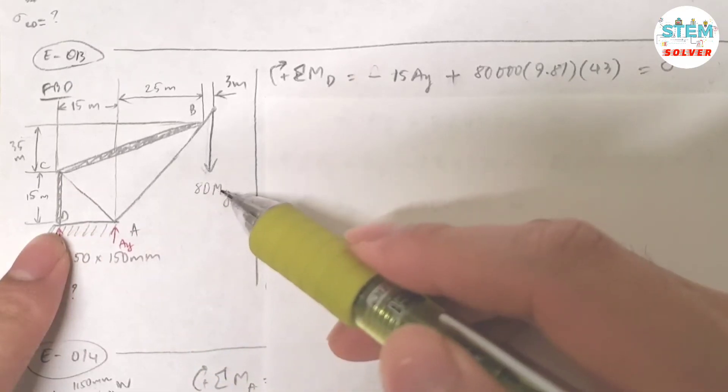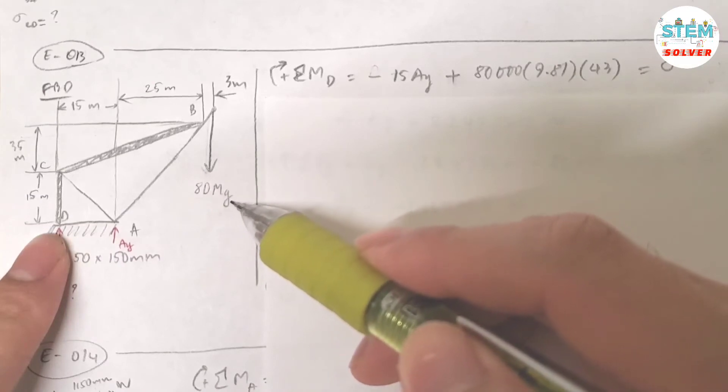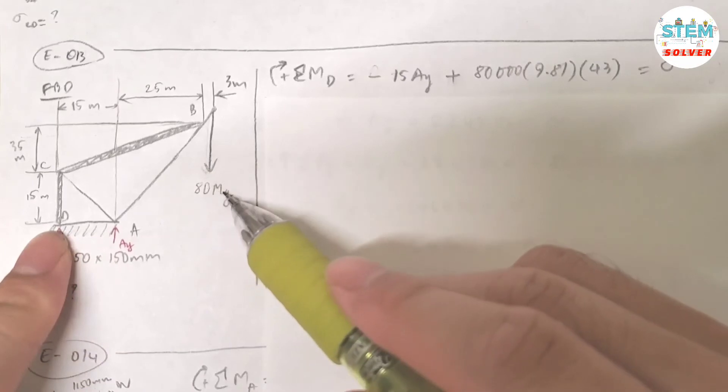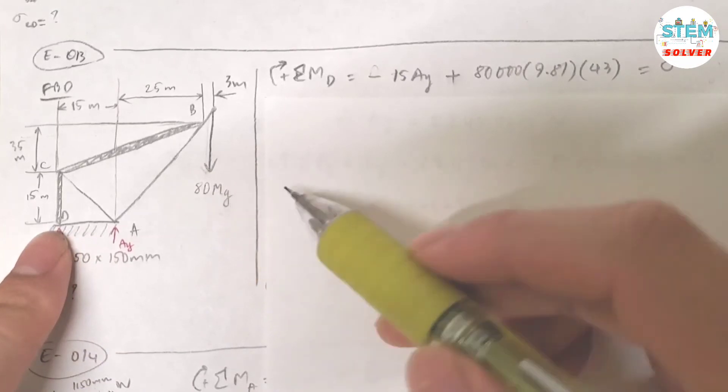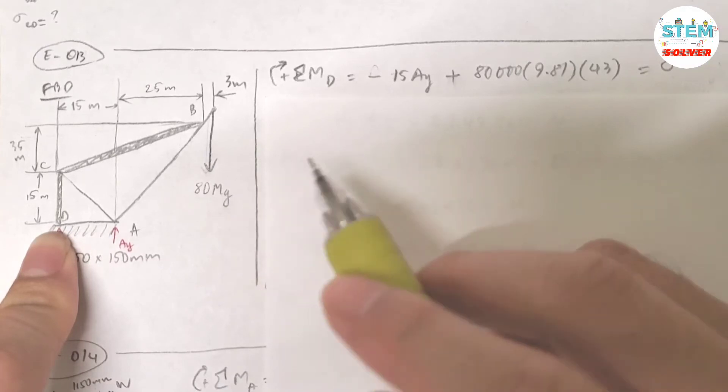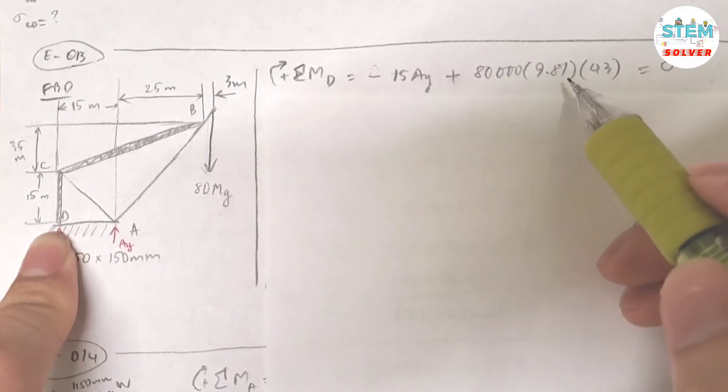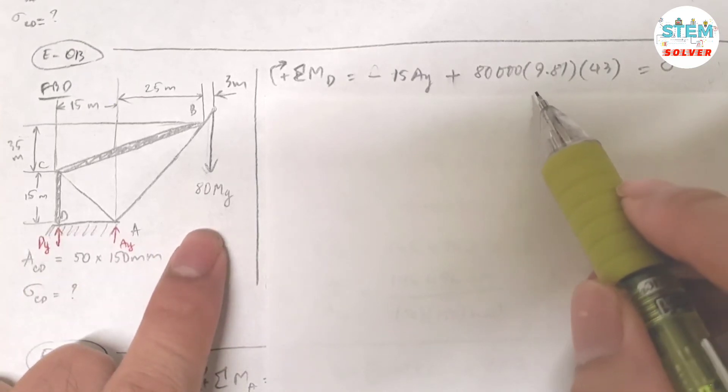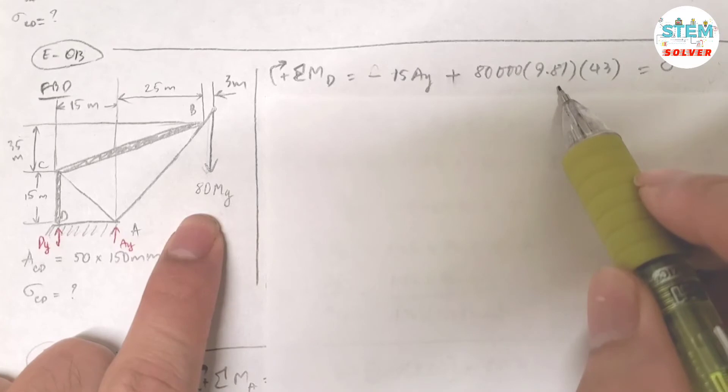This force, I have 80 megagram. So I convert it into kilogram. Mega to kilo, so I multiply by 1000. So I got 80,000. Because this force is in newtons, you have to multiply by the acceleration, I mean the gravity, which is 9.81.